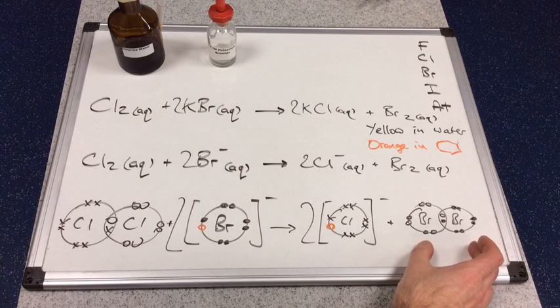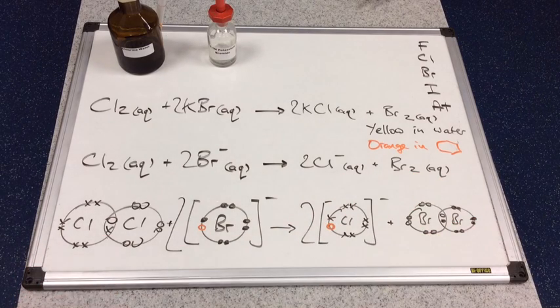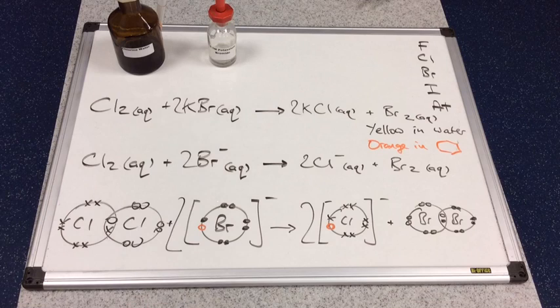Two of those bromine atoms have obviously combined to form a covalently bonded Br2 molecule. And that was the orange color that we saw in the cyclohexane layer. We could say that bromine's been displaced. It's been pushed out. And we've got the Br2 instead of bromide.